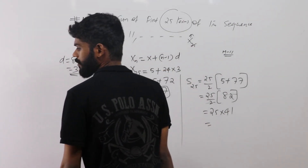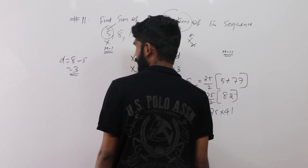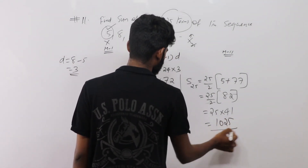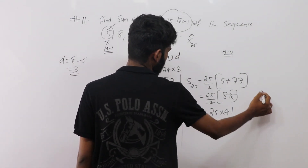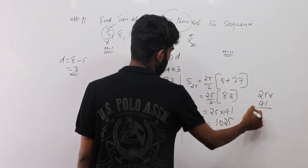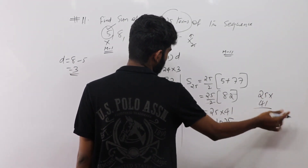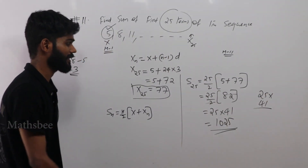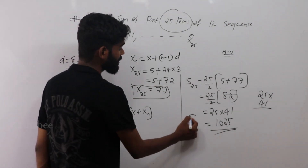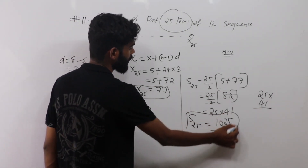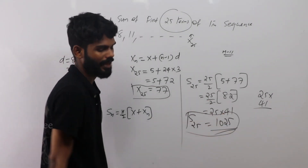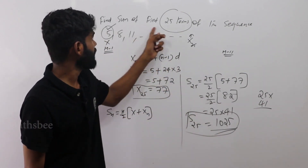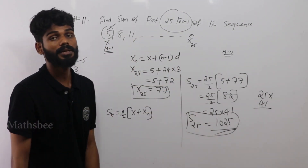We get 25 into 41. S25 = 25 × 41. We get the result: S25 = 1025. That is the sum.